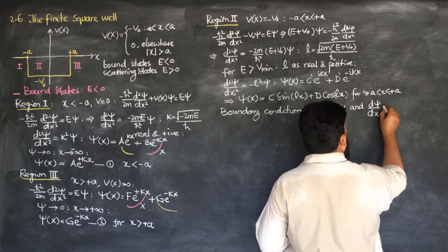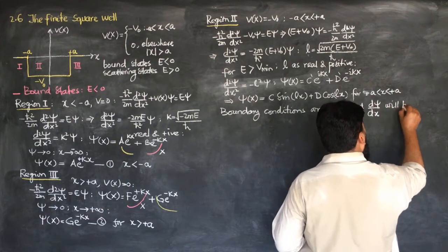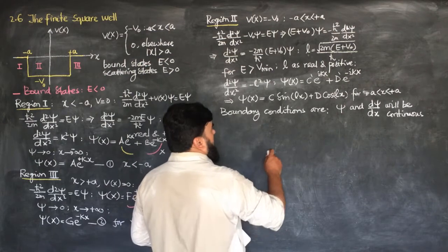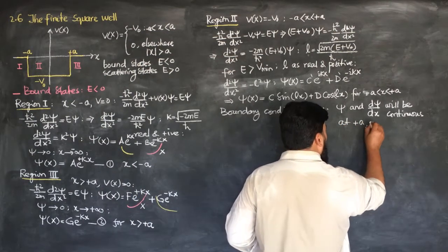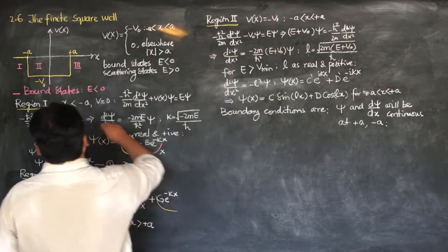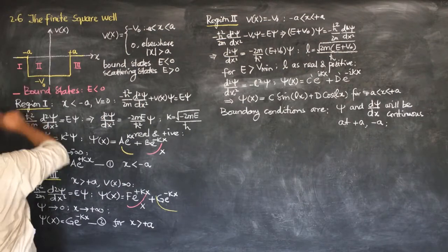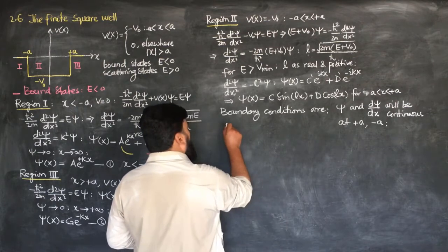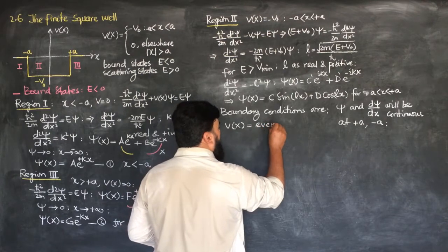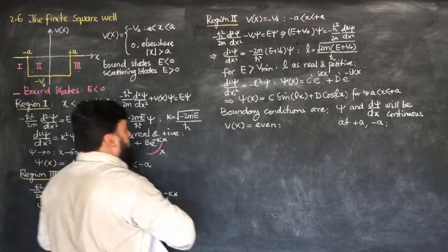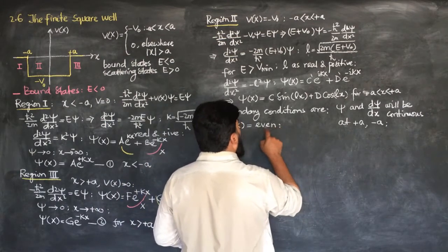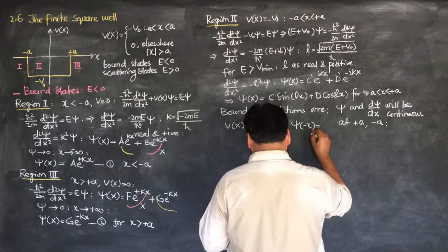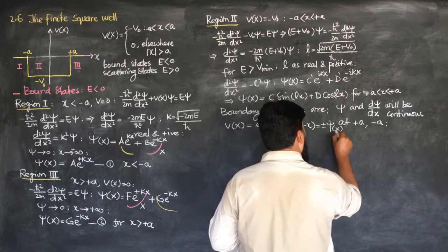The variation in the wave function will be continuous. For the wave function to be continuous at plus A and minus A — these are our boundaries where the potential changes from 0 to V naught — the wave function must be continuous on these boundaries. We know that V of X is even in nature because it is symmetric on both sides, so the wave functions will also be symmetric. This means psi of minus X equals plus or minus psi of X.